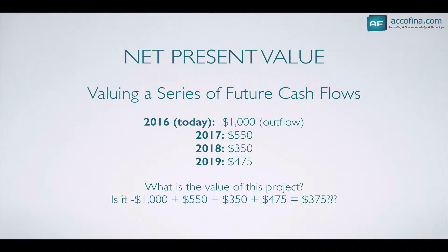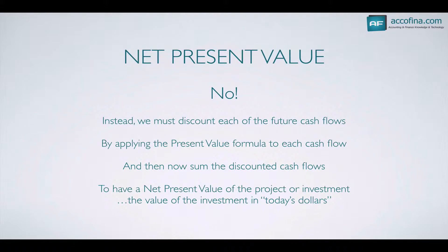Is it simply the $1,000 outlay plus the inflows of $550, $350, $475? So is the value of the project simply the sum of those, which is $375? Remember the time value of money concept we talked about earlier — all of these cash flows are over four different years. The answer is not the simple addition of those numbers. Instead, we must discount each of these future cash flows to account for the time value of money. We do this by applying the present value formula to each cash flow, and then sum those discounted cash flows. From here, we'll have a net present value of the project or investment, and this would be the value of the investment in terms of today's dollars. Rather than having a series of cash flows over four years, we can calculate what all those cash flows would be valued at if we had all the money today.